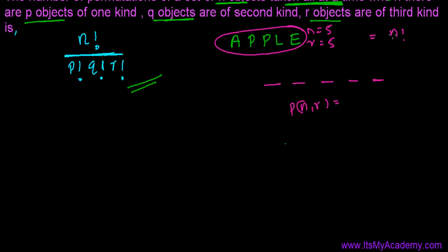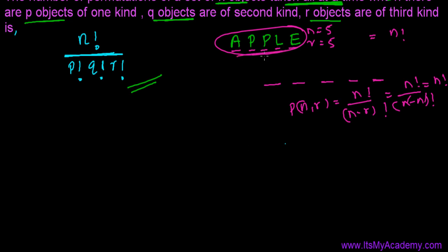Even the nPr formula gives n factorial when r equals n, since n factorial divided by (n−n) factorial equals n factorial divided by zero factorial, which is one. So we have five letters in five places — Apple can be arranged in five factorial ways. But do you think I'm 100% right? No. If you see properly, I'm not right. Apple cannot be arranged in five factorial ways when we take all five letters at once.